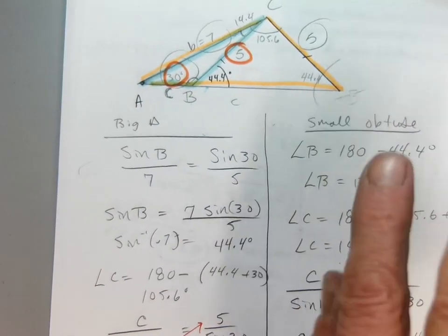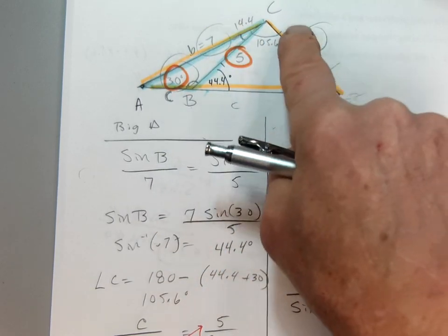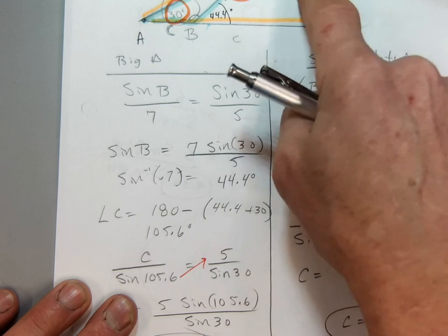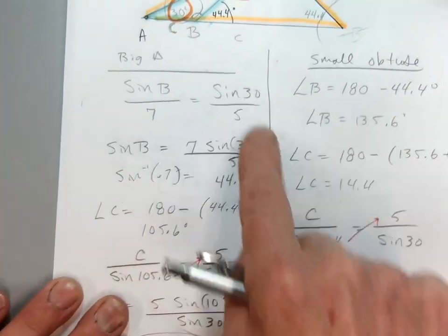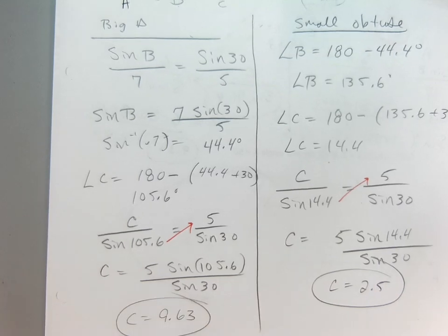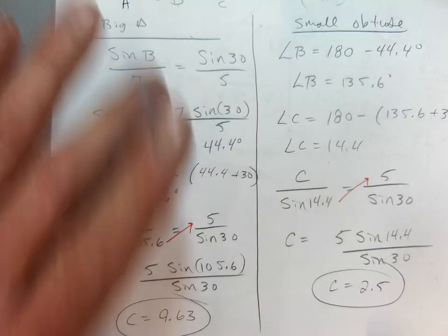Again, we use our opposites. Side C over the sine of 105.6 is equal to 5 over the sine of 30. We multiplied. Use our calculator. We got 9.63. That's no problem. We've done it.